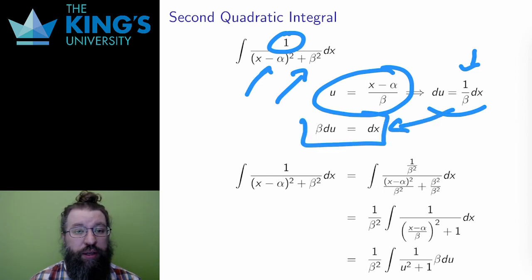If I multiply by beta, I get that beta times du is dx, and then I proceed with the substitution.